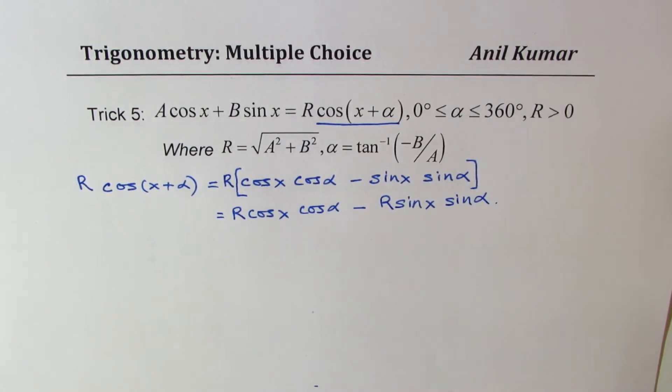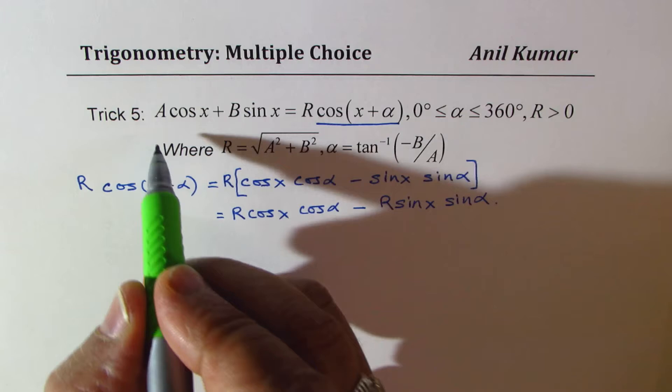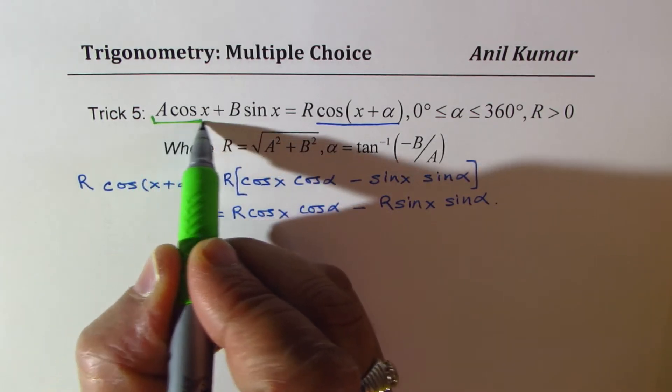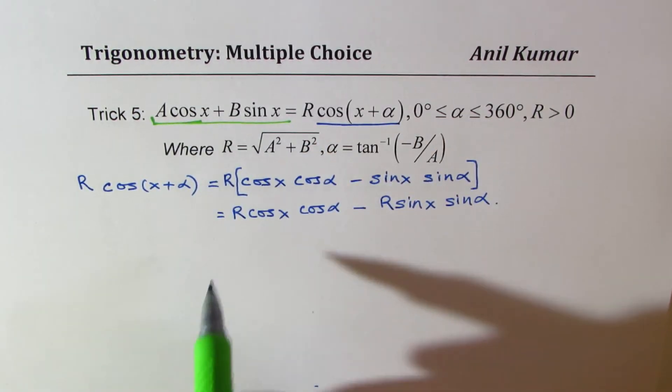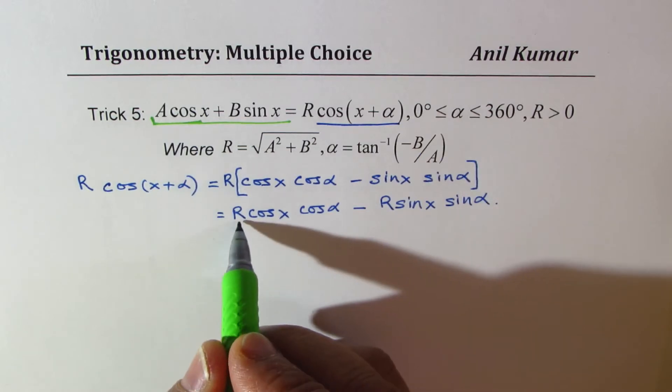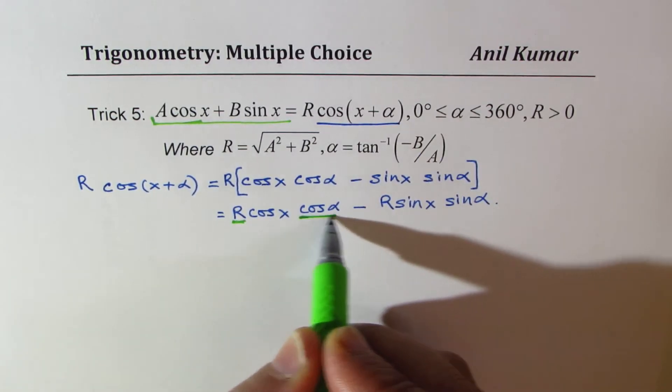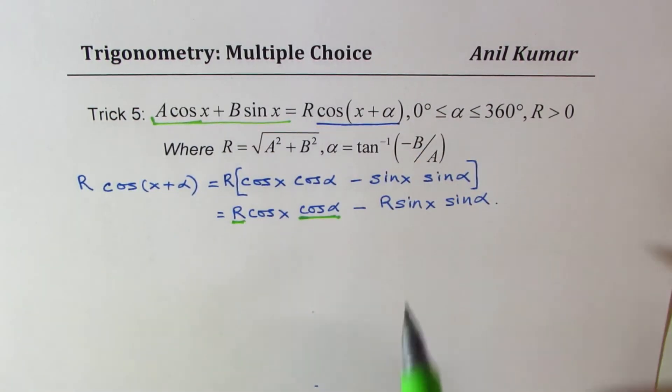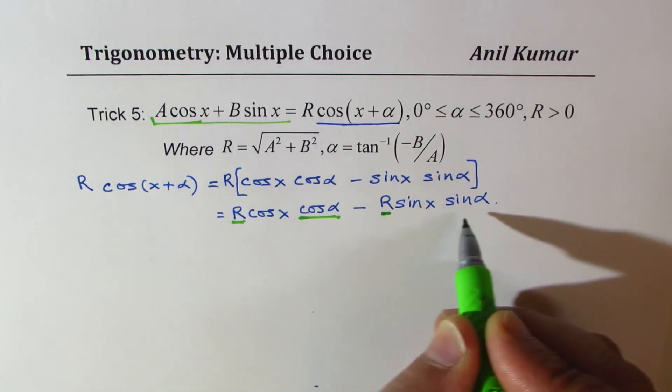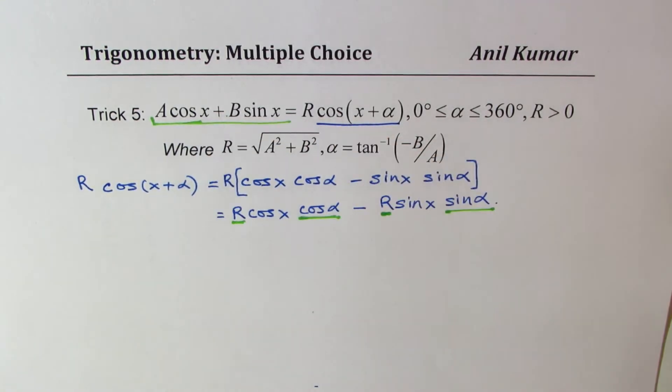If you compare this with the given equation, because cos x is there, R cos alpha could be written as A. Similarly, R sin alpha could be written as minus B.